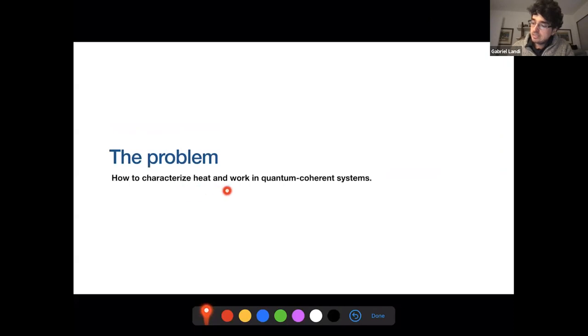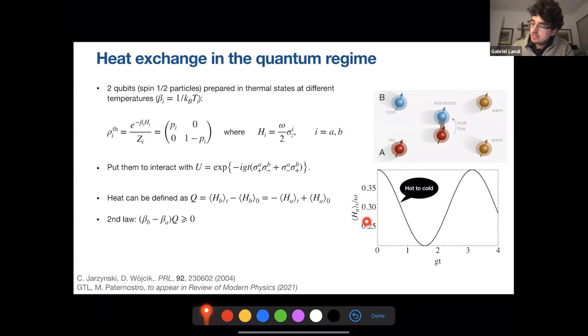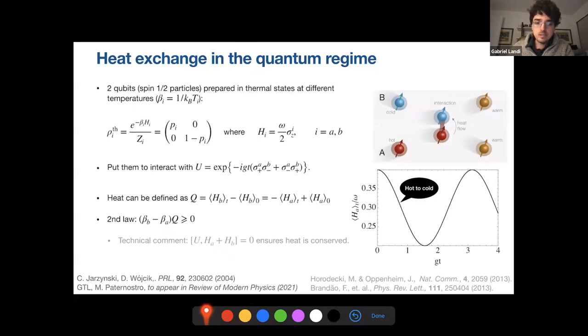So the problem is how do we characterize hidden work in systems that have quantum coherences. So here is a simple example, suppose you have two qubits, which are in thermal states, so no coherences, and they interact with the simplest possible kind of unitary, like a partial swap. Now this kind of partial swap has nice thermal properties, which means that if one qubit is hot, the other one's cold, and they interact, they end up becoming warm and warm. So there's a natural flow of heat. And this is shown here, this is the energy of the hot qubit, and it goes down. So heat is flowing from hot to cold. And this obeys a second law, which is actually ensured by this strict energy conservation, which appears in resource theories a lot. That ensures that everything is well behaved and we get this correct thermal intuition from this kind of process.